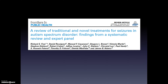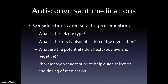A review paper published in 2013 examined both traditional and novel treatments for seizures in those with autism. The first major category is anticonvulsant medications. Considerations when selecting a medication include: the seizure type, the mechanism of action of the medication, potential side effects both positive and negative, and whether pharmacogenomic testing could guide selection and dosing. Pharmacogenomic testing looks at genetic variants that inform how an individual metabolizes medications, whether they need different dosing, or whether they may be more prone to side effects.